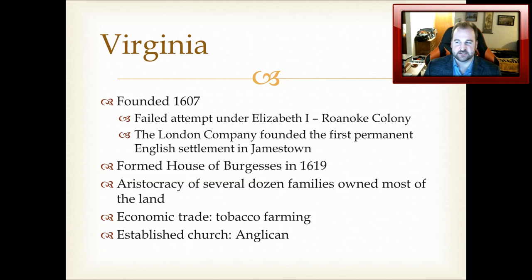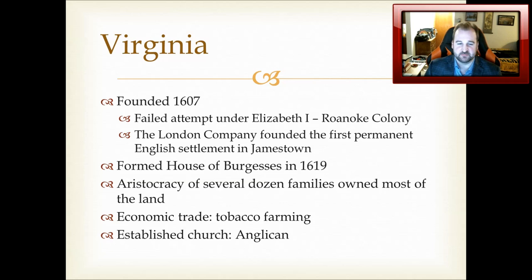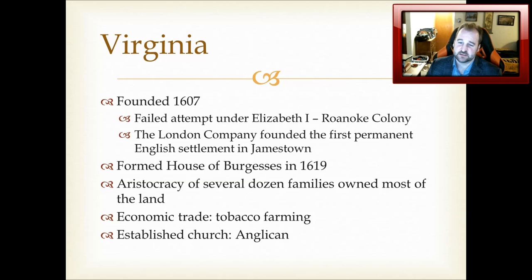Let's talk Virginia. When I give the founding dates, some of these dates can be disagreeable, because sometimes people consider the date the first time a settlement was created, sometimes the first time a charter is received, and sometimes the first time the colony becomes a royal colony directly beneath the crown. For our purposes, we went with traditional charter-based founding dates. Virginia was founded in 1607, after a failed attempt by Elizabeth I to establish the Roanoke Colony in the late 16th century.